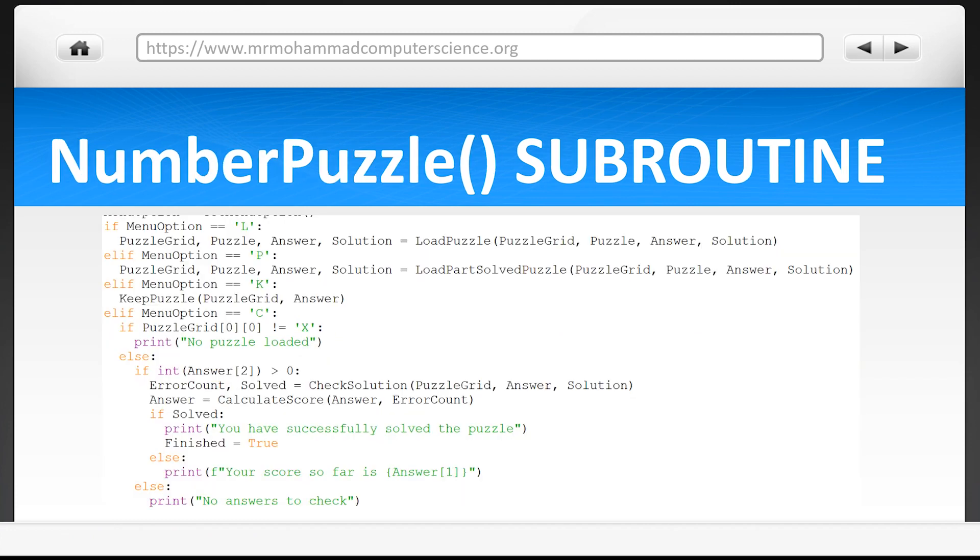Back in NumberPuzzle, the new condition which is part of this nested if statement checks to see if the solved variable is true. If it is, a message is shown to the user stating they have solved the problem and finished is set to true which ends the game.